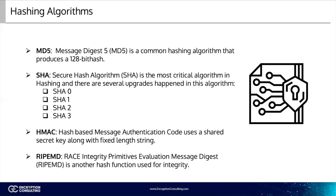SHA3, previously known as KECCAK, is an alternative to SHA2. The National Security Agency created SHA1, whereas SHA3 was created outside of the NSA and was selected through a non-NSA public competition. It can create hashes of the same sizes as SHA2: 224, 256, 384, and 512.